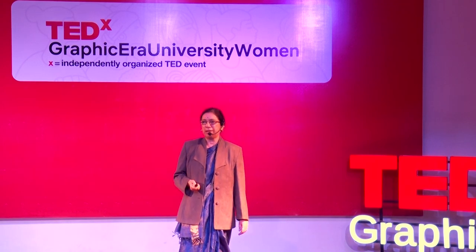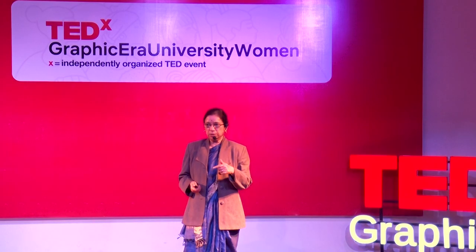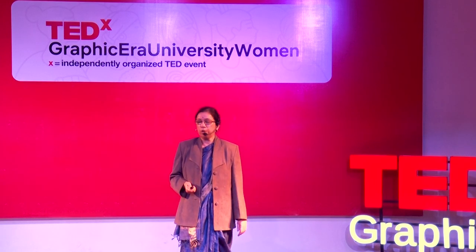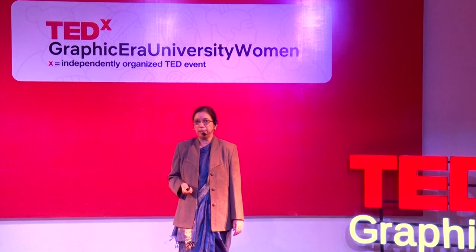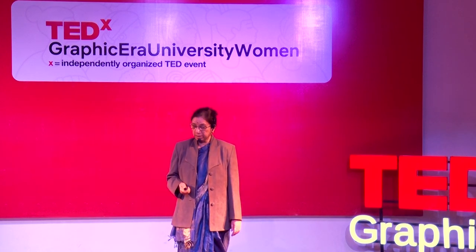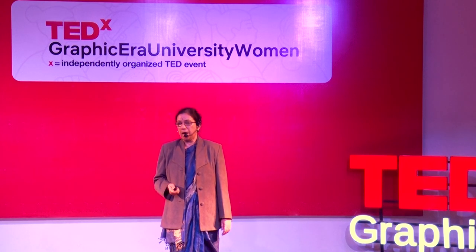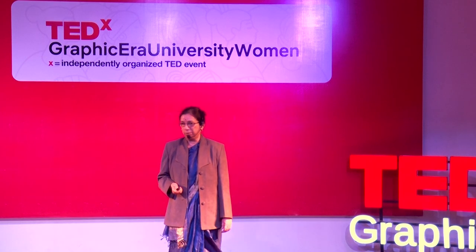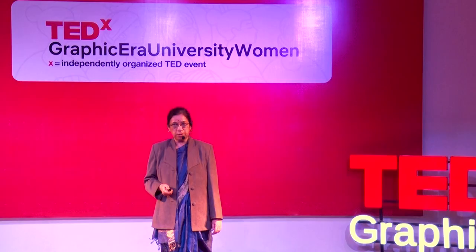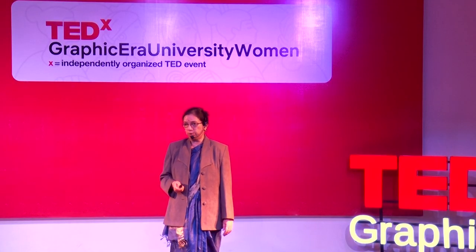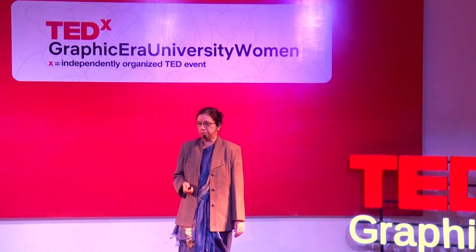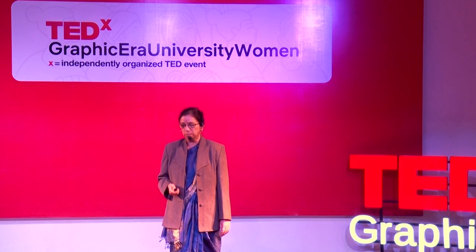In biodiversity we refer to animal biodiversity, plant diversity, and microbial diversity. Among these three classes, microbial diversity remains somewhat neglected as microorganisms are not visible in any environment like plants or animals — they are microscopic and need magnification. Nevertheless, microorganisms are an integral component of each and every ecosystem. They are ubiquitous in nature because of their small size, easy dispersal, and metabolic versatility. They can utilize a very wide range of substrates as nutrient sources and possess the ability to survive and multiply in diverse habitats.